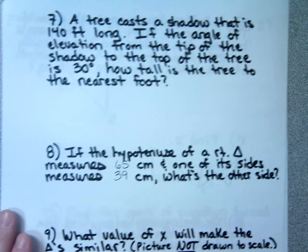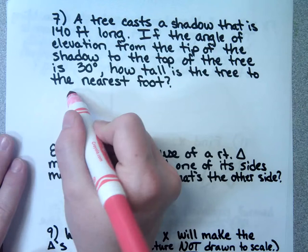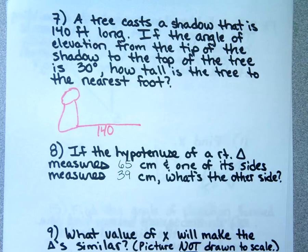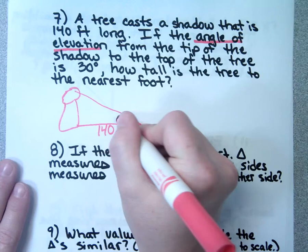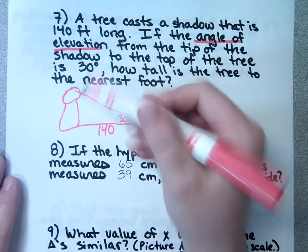Number 7 is one where we have to draw a picture. A tree casts a shadow that is 140 feet long. If the angle of elevation — looking up — from the tip of the shadow to the top of the tree is 30 degrees, how tall is the tree to the nearest foot? I'll call the height X. What kind of triangle is this? A 30-60-90.